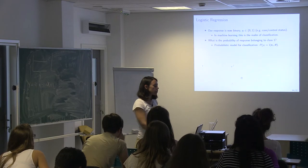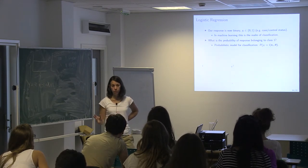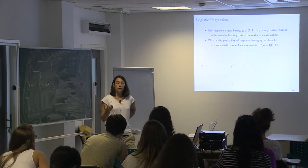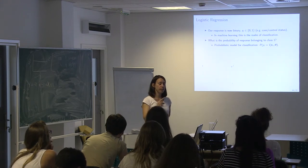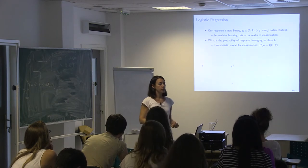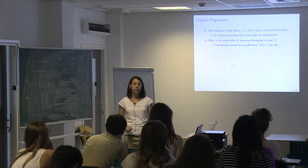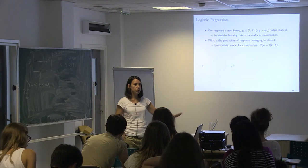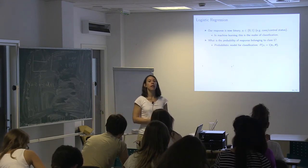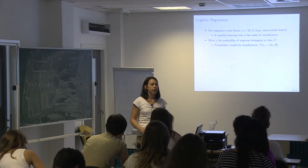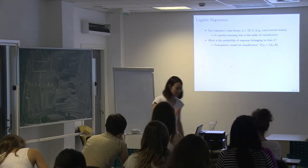Now we're going to see what happens with a binary output variable — when we want to classify cases and controls, which is the most common example in our datasets. We separate regression (continuous output) from classification (binary or categorical output). If we have just two classes — cases and controls — we represent them as 0 and 1. We might also have more than two classes, for example classifying colors as red, blue, or green.